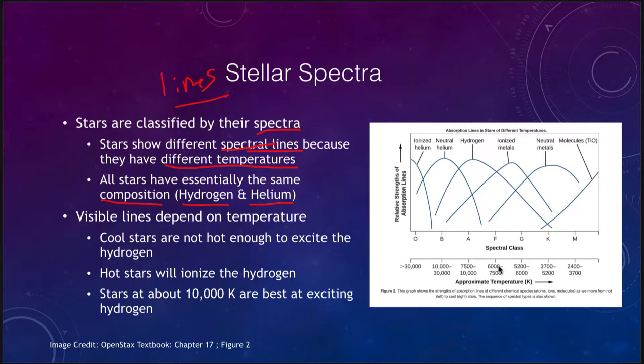Looking at the hydrogen line for example, this graph shows how strong the hydrogen line will be versus various spectral classes. In spectral class A it would be the strongest, but it would be very weak in class M or class O. We'll talk further about those classes later on.